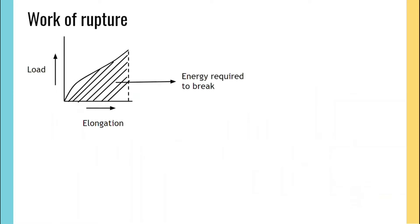Work of rupture is the area under the stress-strain curve, that is the load-elongation curve. It is the energy required to break, written as integral from zero to break of F·dL. Its unit is gram per denier or gram per tex. By Hooke's law, it is given as half of breaking load times breaking elongation.